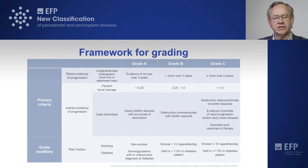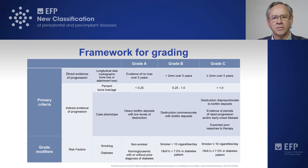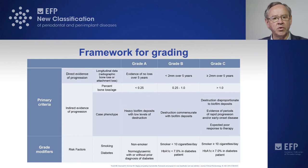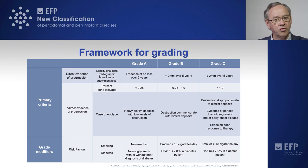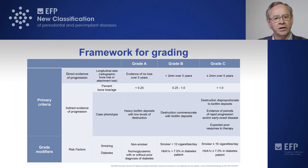This slide summarizes the criteria for grading. If we have direct evidence of progression, we measure what progression has occurred in the last five years: more than two millimeters grades the patient at C, less than two millimeters places them in grade B, and no progression at all places them in grade A. If we lack direct evidence, we use the bone loss-to-age ratio: above 1.0 grades C, between 0.25 and 1.0 grades B, and below 0.25 grades A.